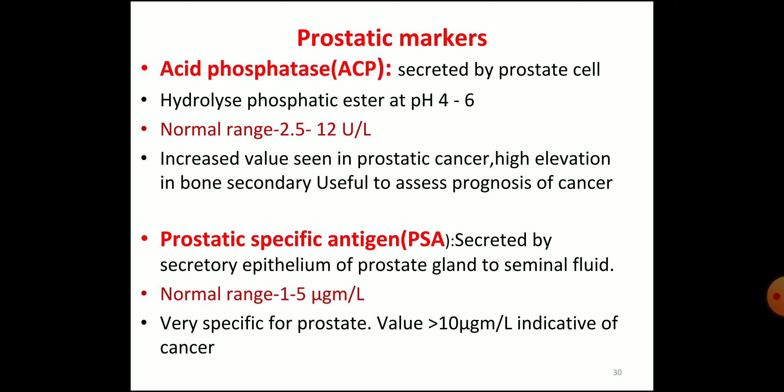Other markers include prostatic markers. Acid phosphatase is secreted by prostatic cells, hydrolyzes phosphate esters at pH 4 to 6, normal range 2.5 to 12. Increased values are seen in prostatic cancer; high elevation is seen in bone secondaries and is useful to assess prognosis. Another prostatic marker is prostate-specific antigen (PSA), secreted by the secretory epithelium of the prostate gland into seminal fluid. Normal range is 1 to 5 micrograms per liter; values more than 10 micrograms per liter are indicative of cancer. These two — acid phosphatase and PSA — are the prostatic biomarkers.